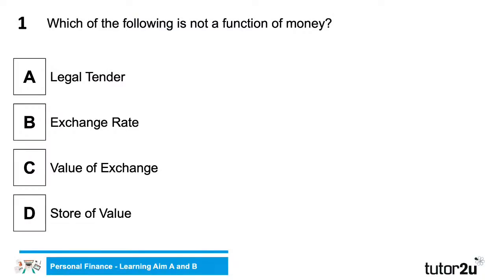Here we go — which of the following is not a function of money? Is it A) legal tender, B) exchange rate, C) value of exchange, or D) store of value? What do you think — is it A, B, C, or D? Pop your answers in the chat window and then Chris will give us the answer.